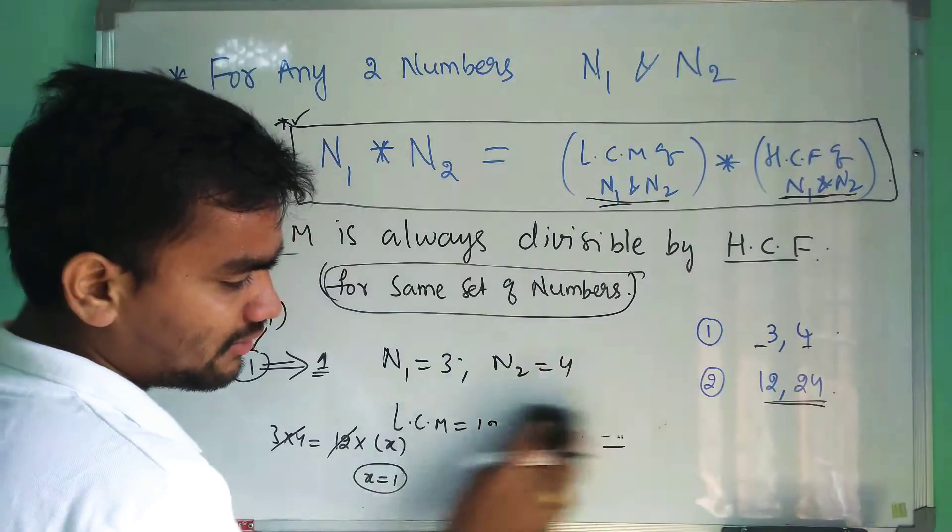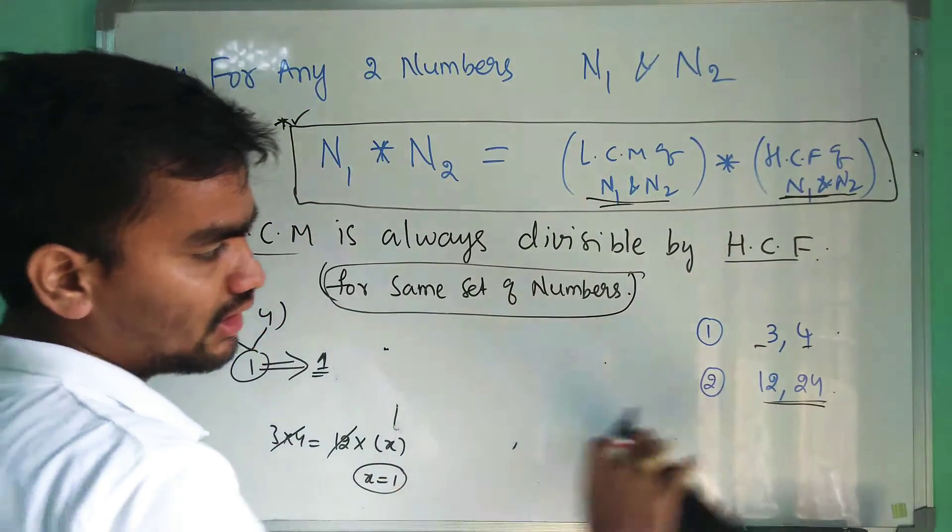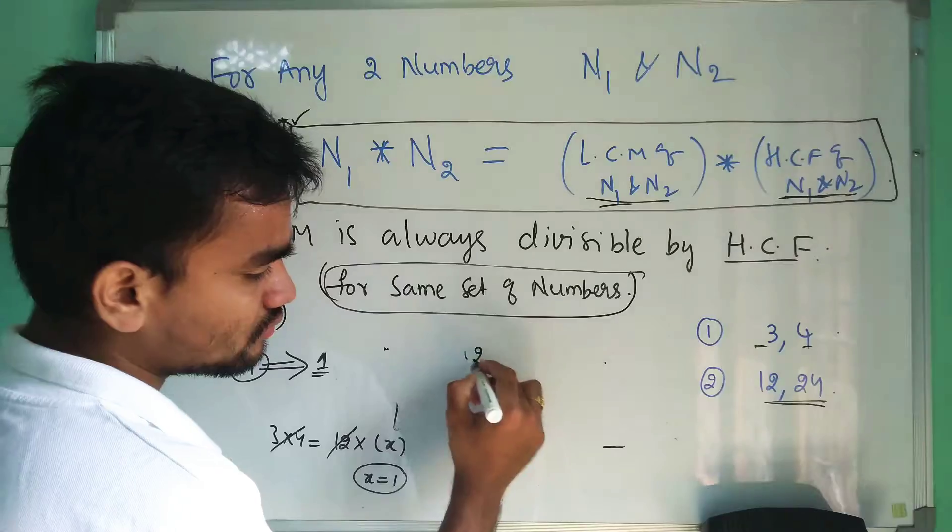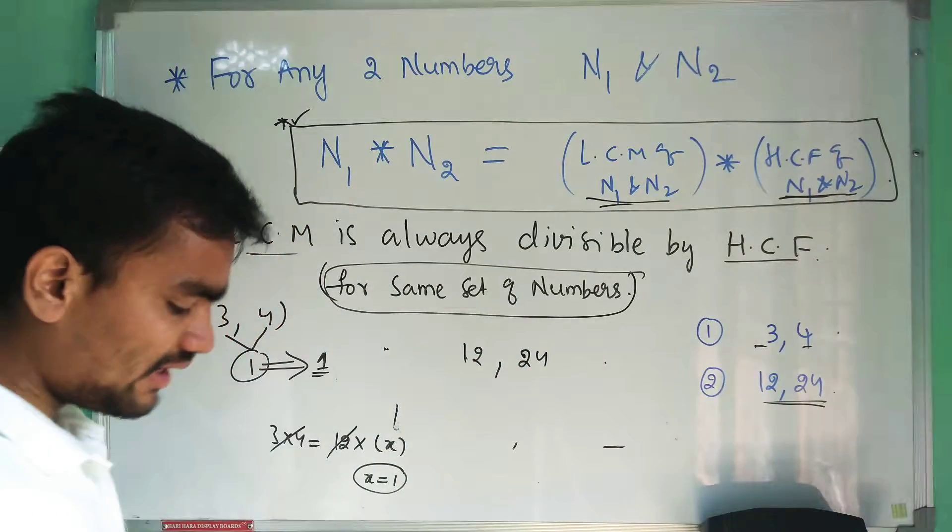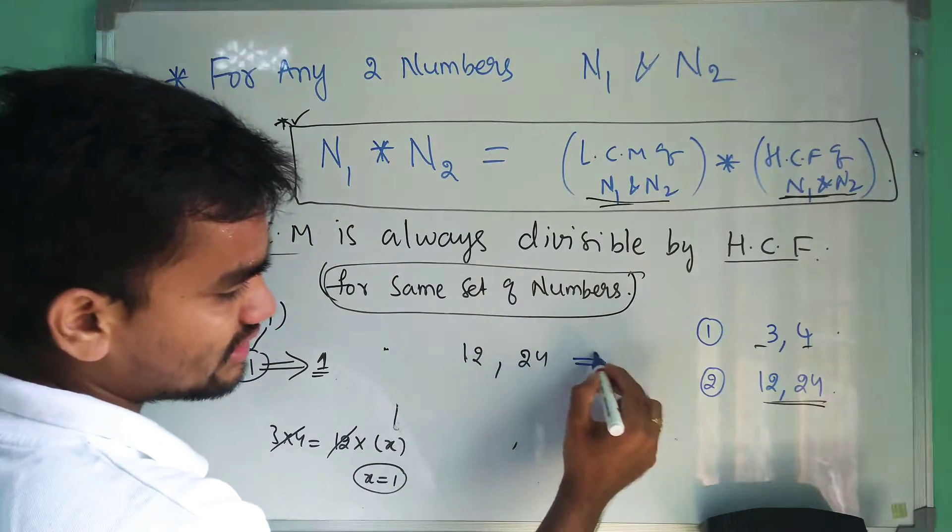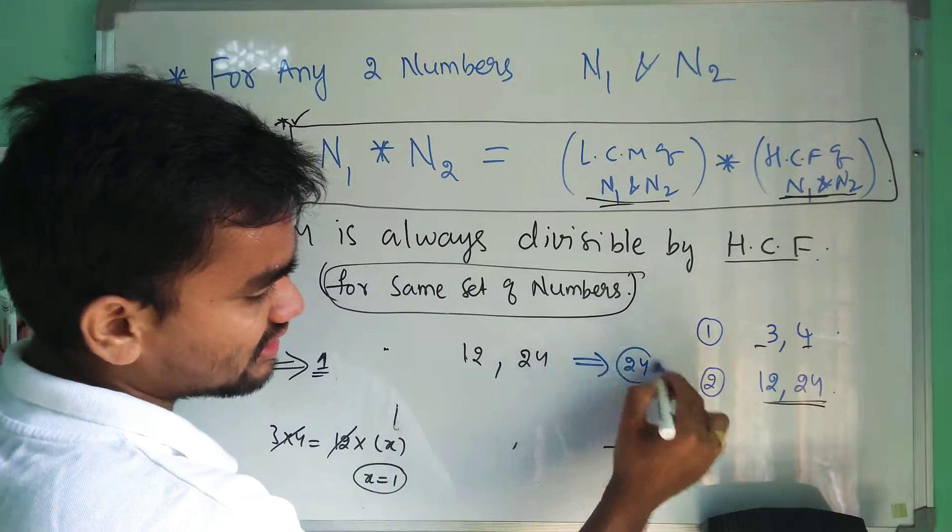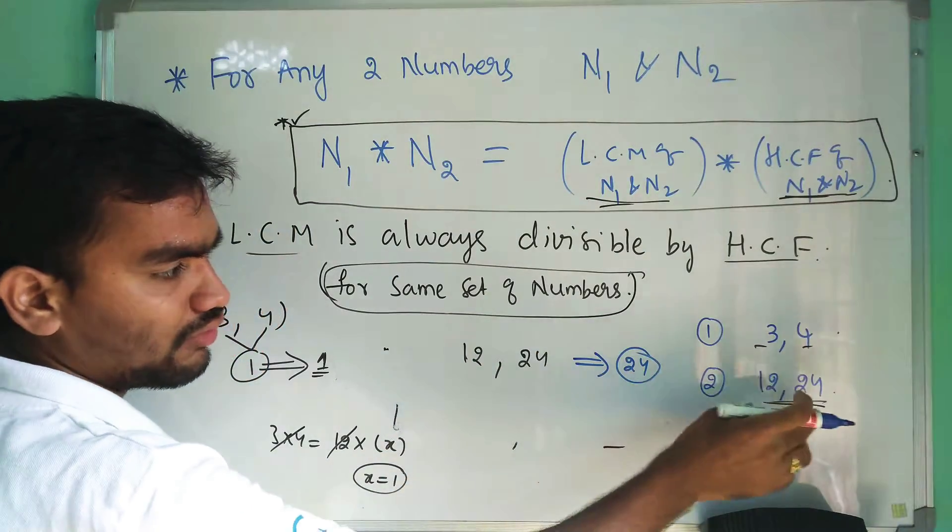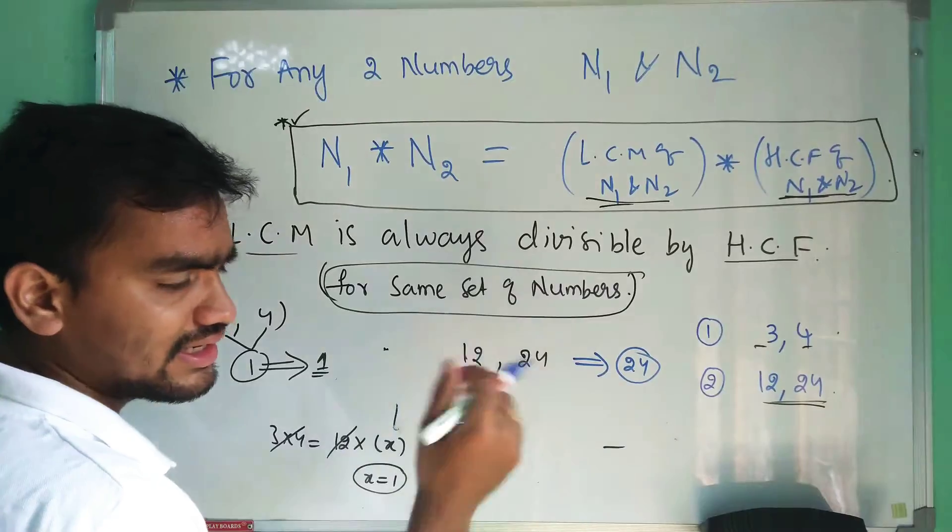So let me take one more example, that is for 12 and 24. If you multiply 12 and 24, as I already told, the LCM is 24. We discussed in the previous video for 12 and 24 we had computed in different methods.